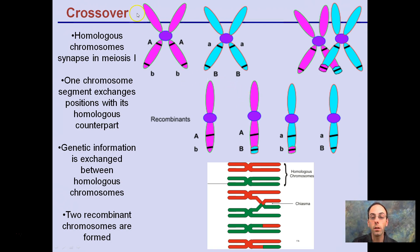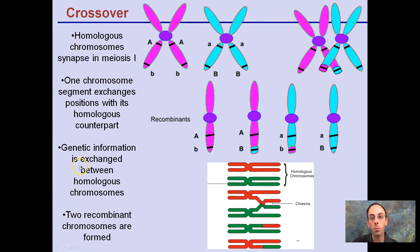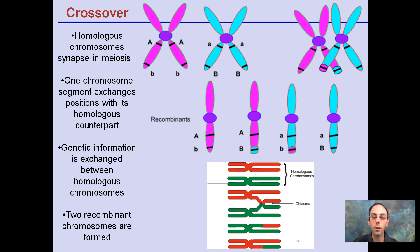Something else that adds to genetic variability is crossing over, which we looked at during meiosis 1. Homologous chromosomes basically come into contact with one another, and a little part of one can combine with another part of another — one can break off and transfer over. Genetic information is exchanged between homologous chromosomes, with one kind of flipping positions with the other. The two recombinant chromosomes are then formed, and this adds to the genetic variability of an offspring.